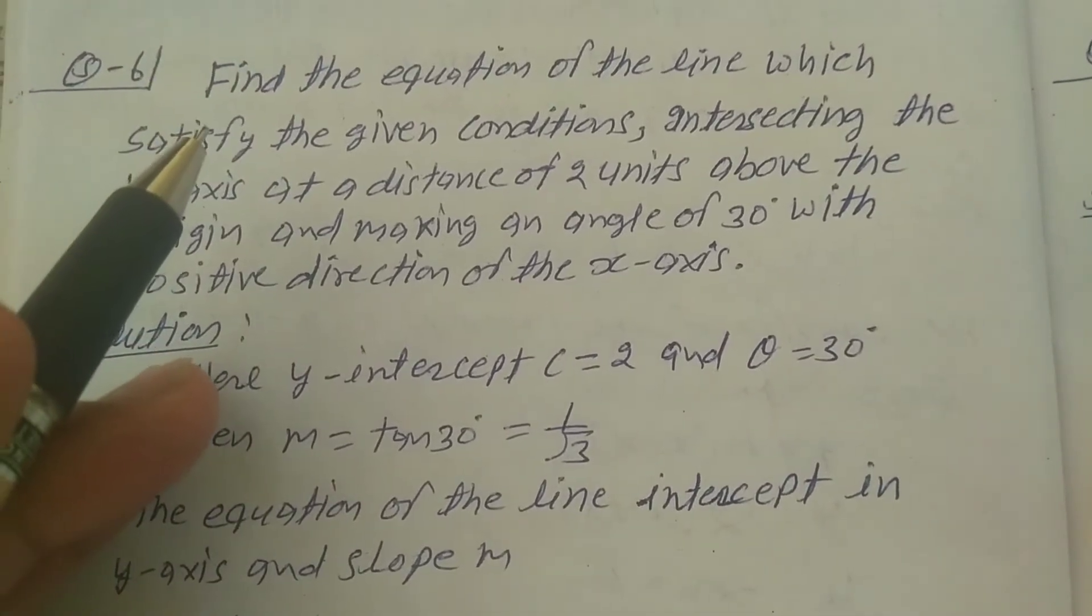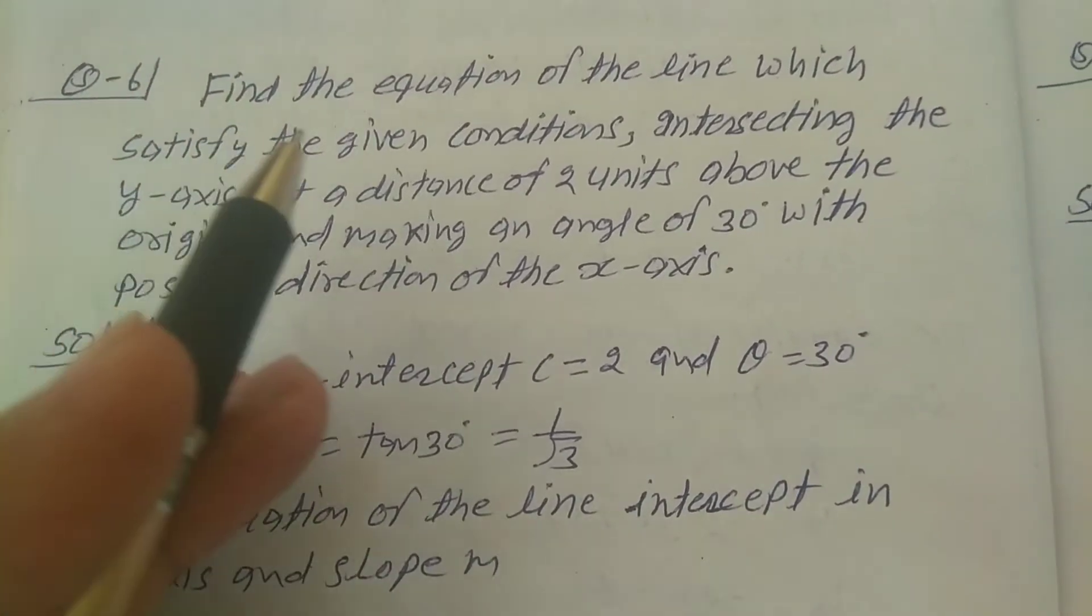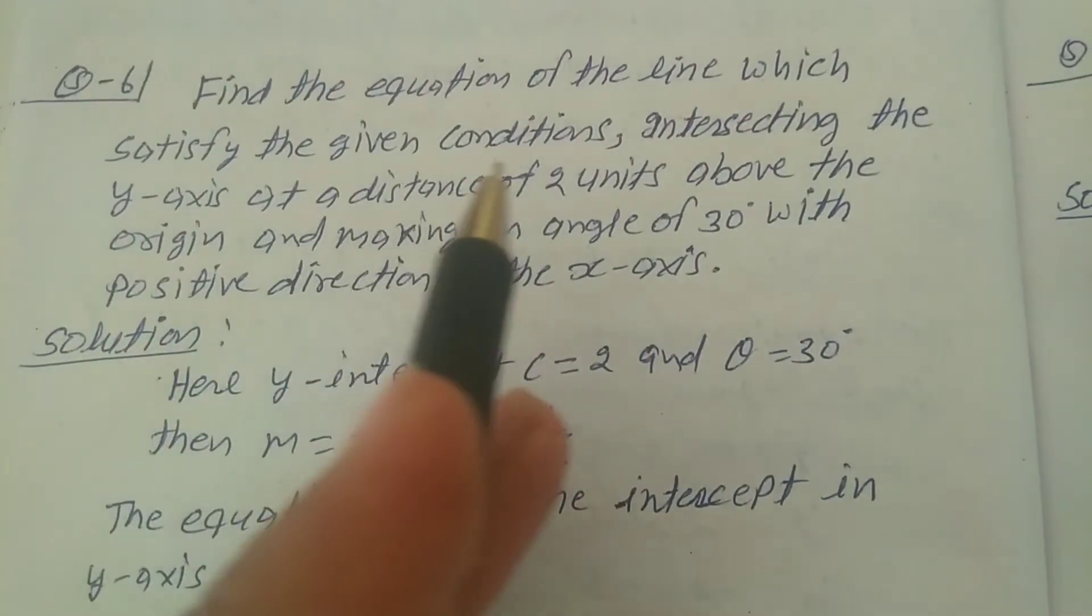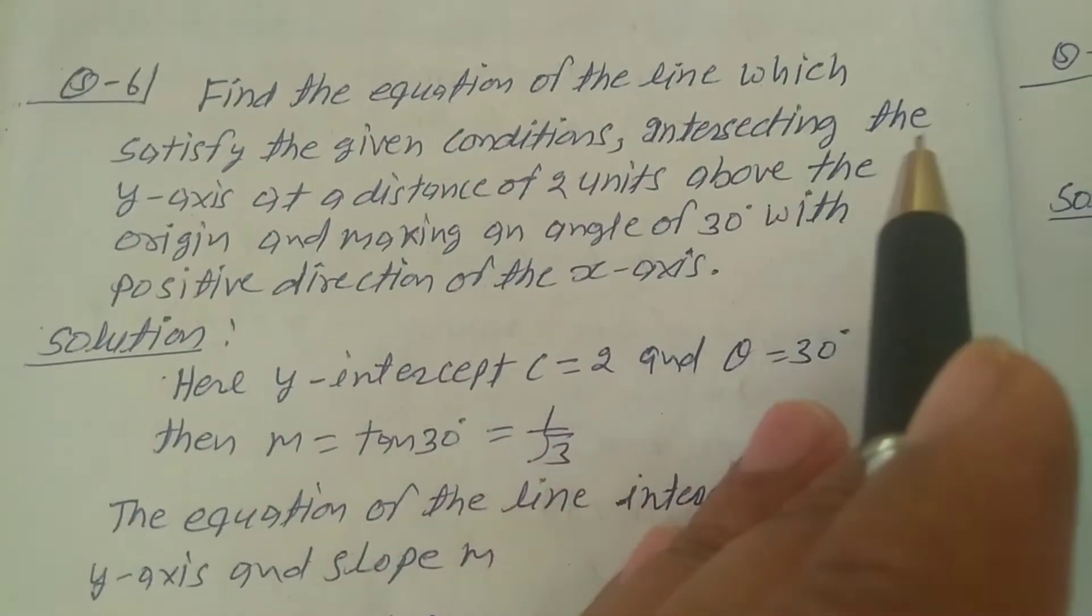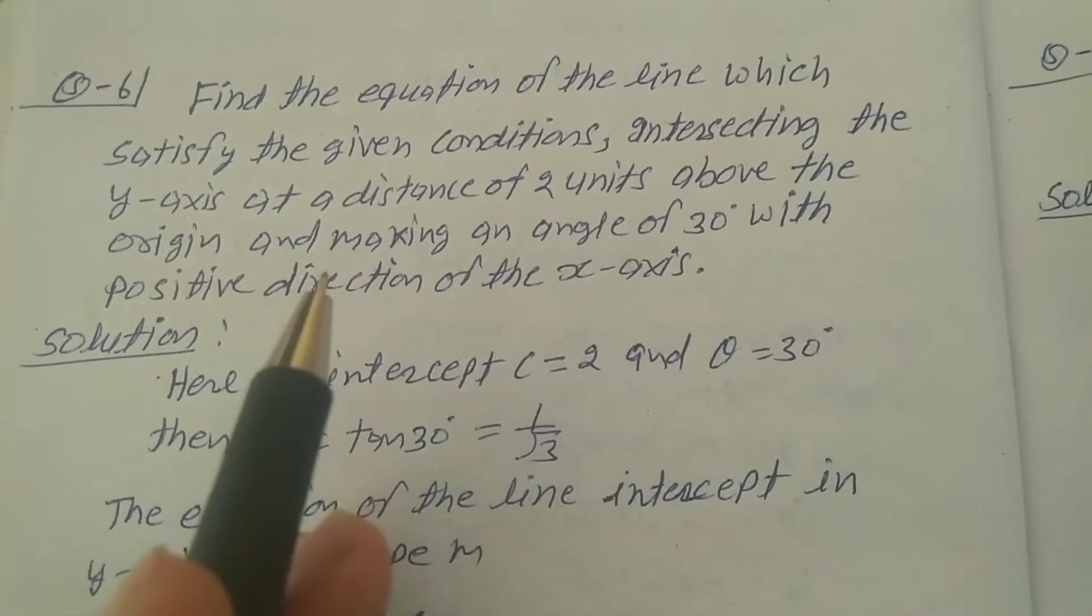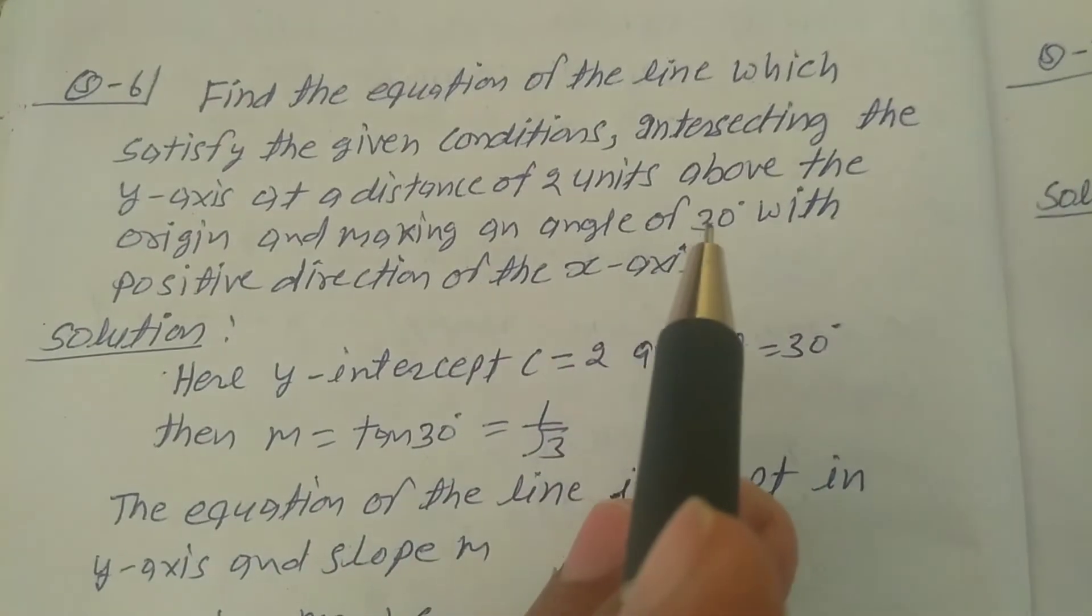Explaining question number 6, Exercise 10.2, Class 11th. Find the equation of the line which satisfies the given conditions: intersecting the y-axis at a distance of 2 units above the origin and making an angle of 30 degrees with the positive direction of the x-axis.